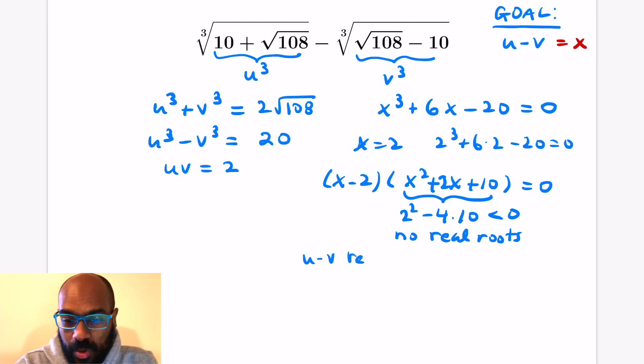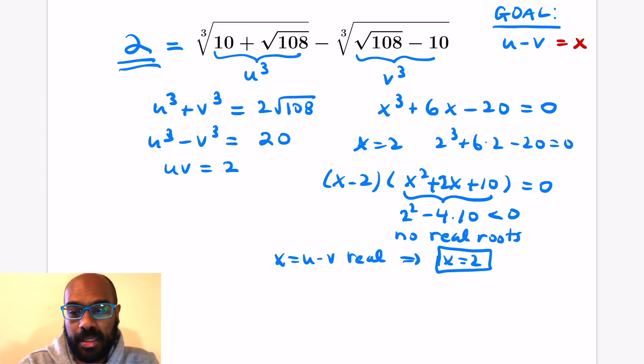So the only real solution x for that cubic equation that u minus v satisfies is x equals 2. And so that means that our expression that we had for this entire irrational looking number actually has to be 2. Again, because it's a root of a cubic equation that only has one real root, and that real root is 2. So this expression has to be 2.